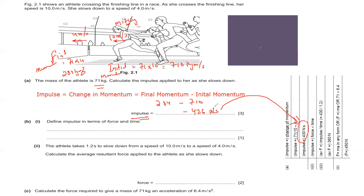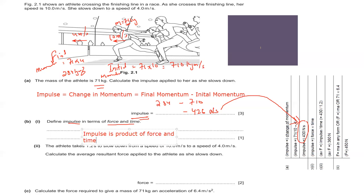We also need to define impulse in terms of force and time. Impulse equals force multiplied by time — when you multiply force by the time interval, you get the impulse.